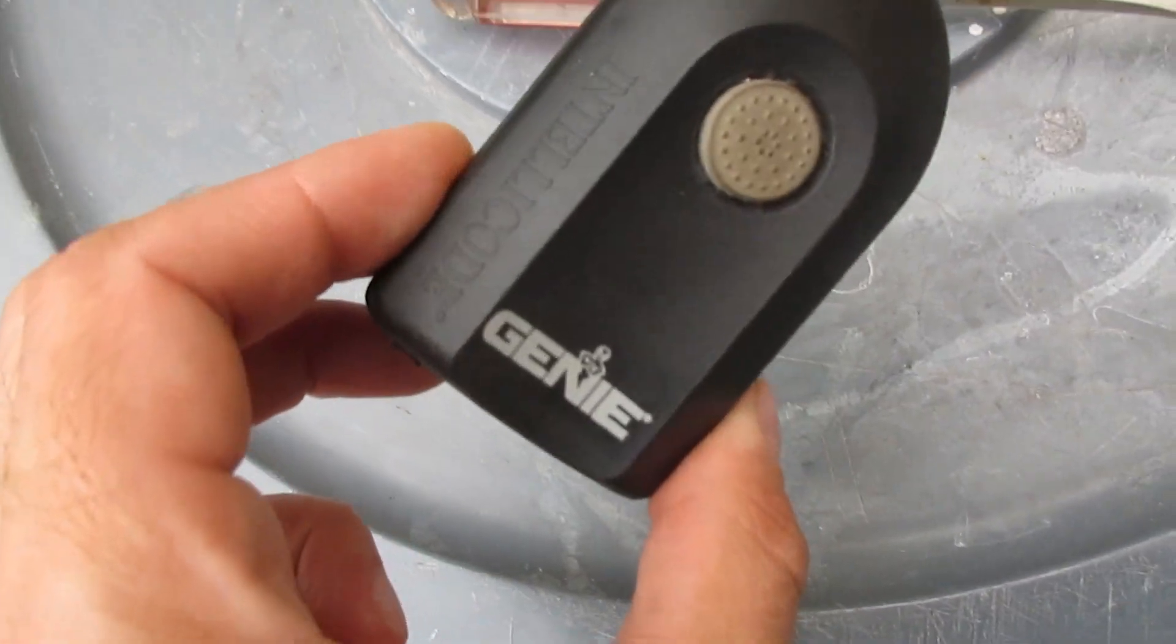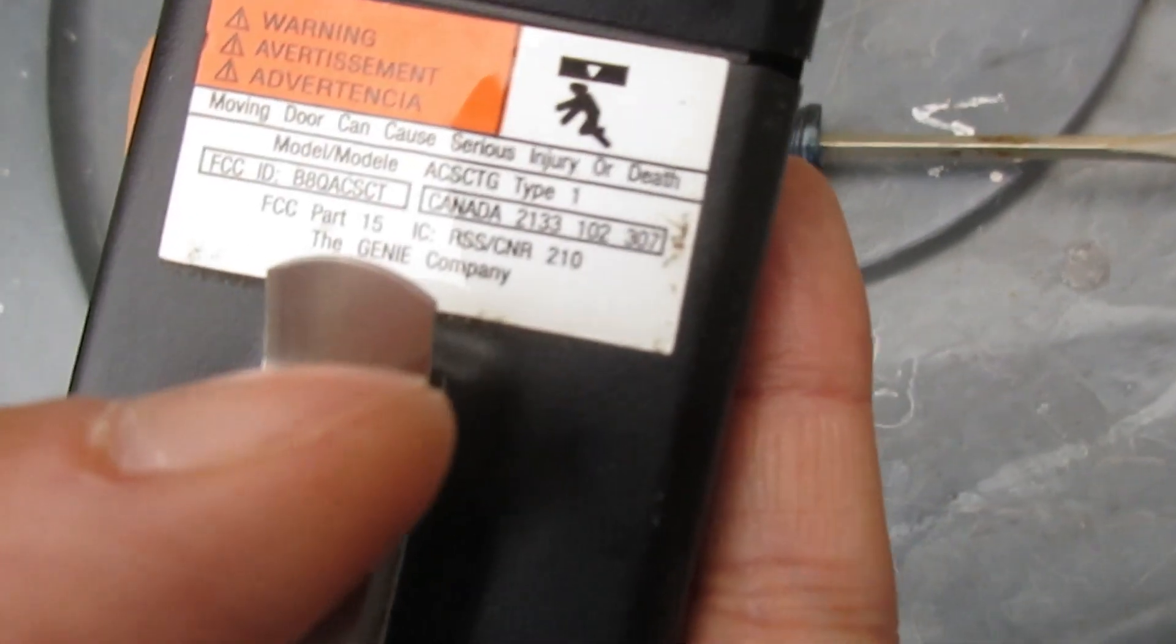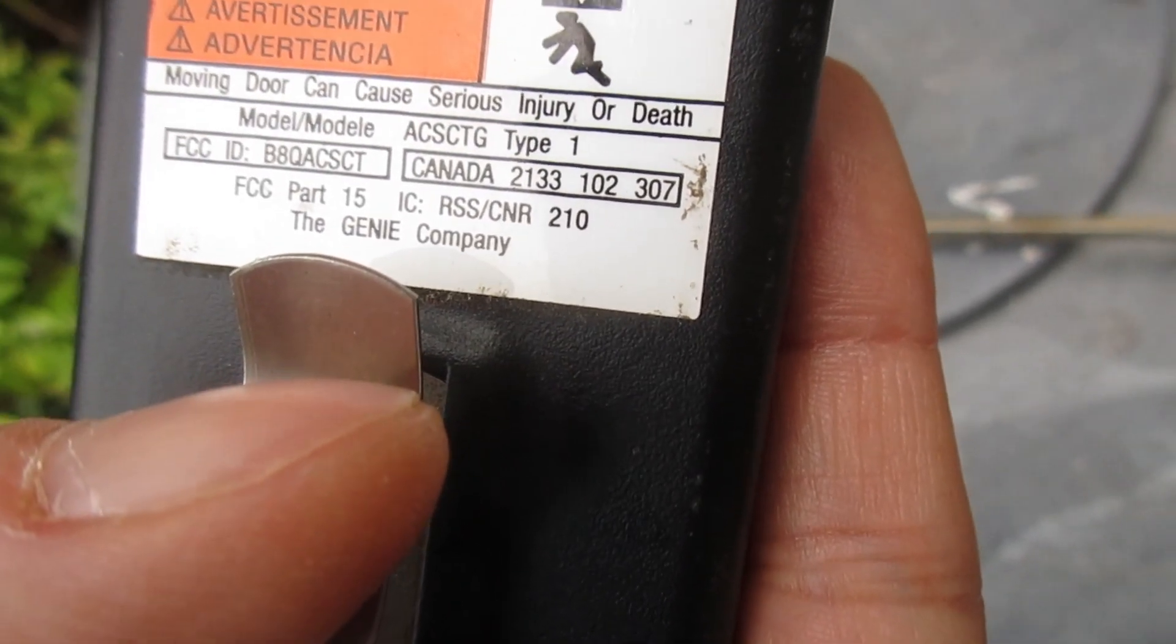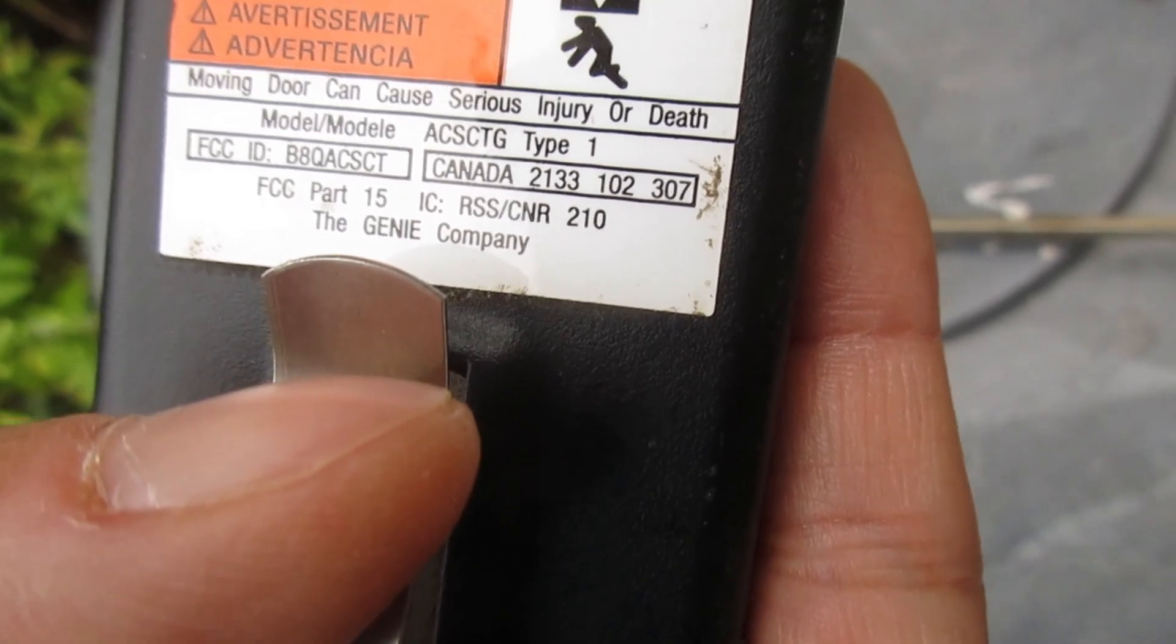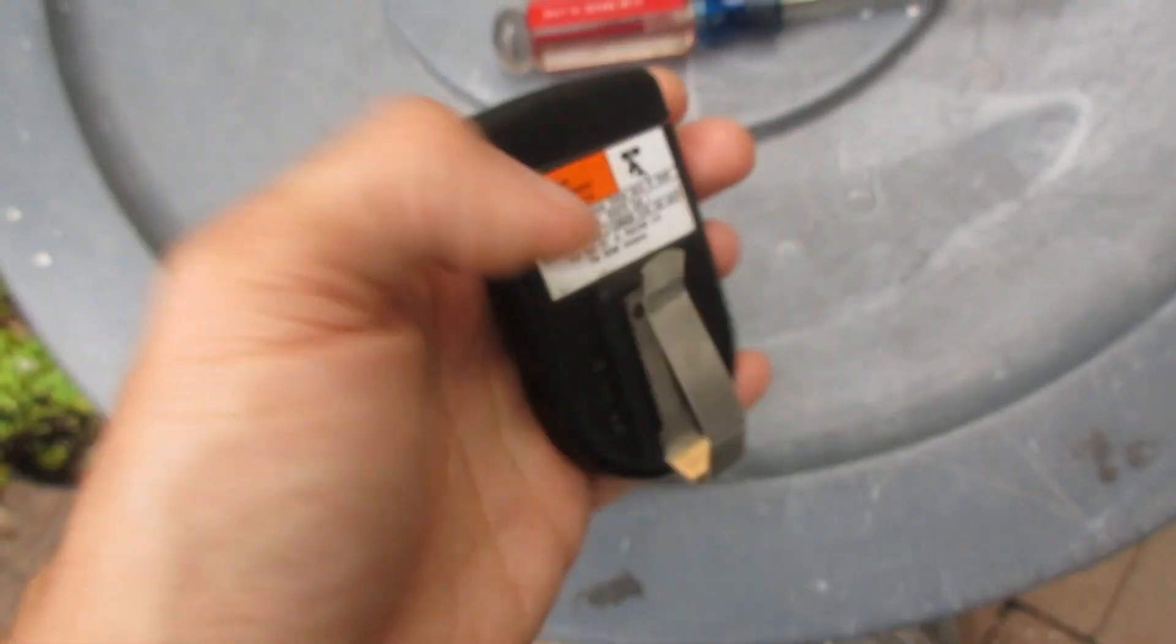I have a Genie IntelliCode 1 button classic style ACSCTG type 1 remote and maybe your battery's bad in it. How do I get this thing open?